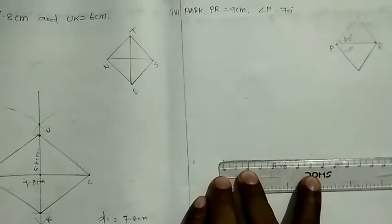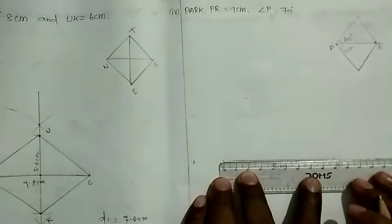First, diagonal and diagonal are 9cm. First, we draw the diagonal 9cm.